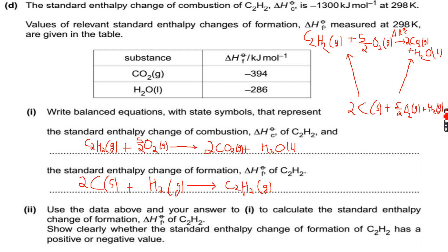These are the elements. The left arrow is the standard enthalpy change of formation of C2H2, which is what we have to calculate. The right arrow is 2 times the standard enthalpy change of formation of CO2 plus the standard enthalpy change of formation of H2O.